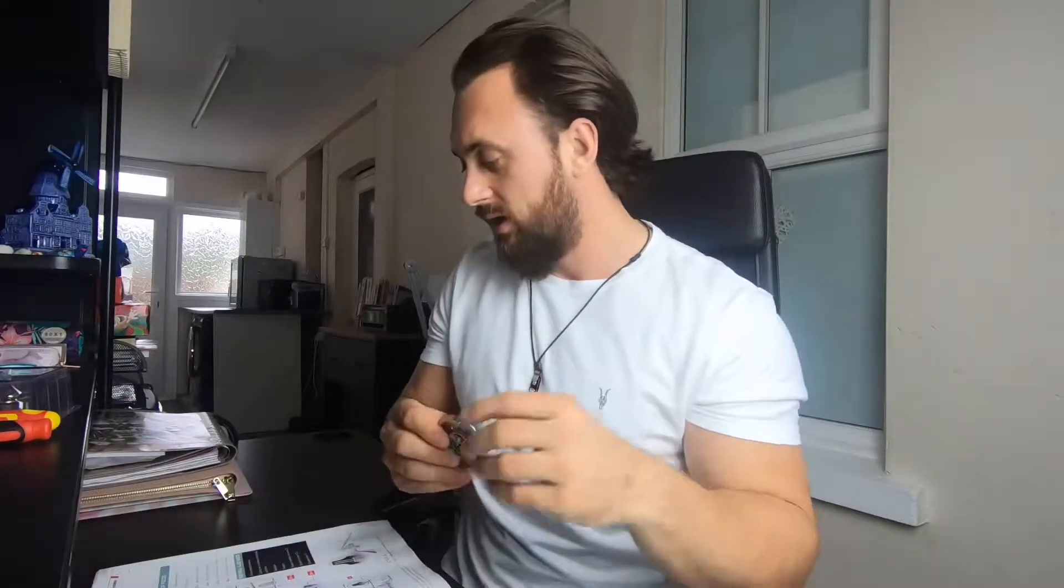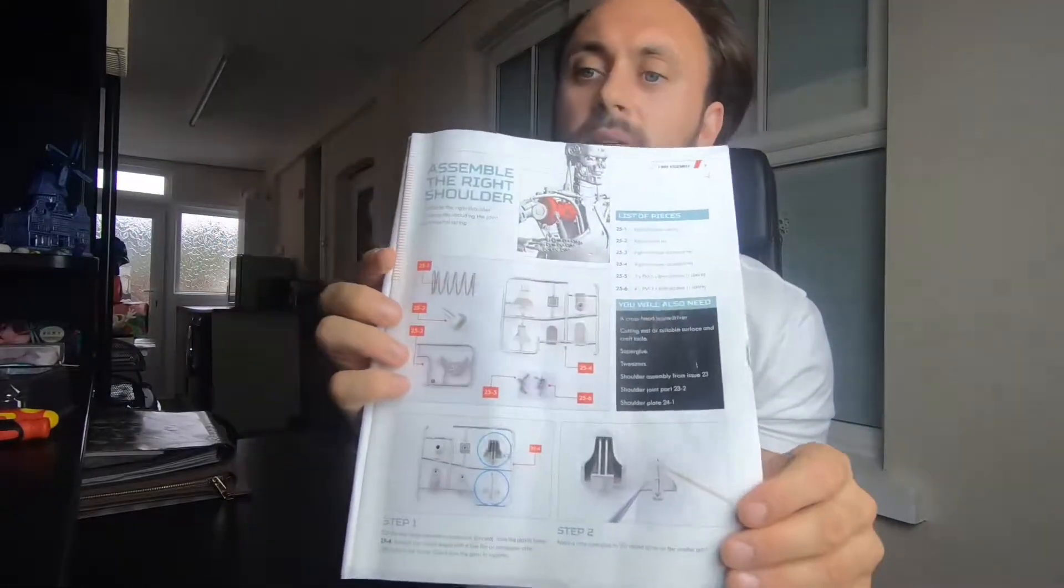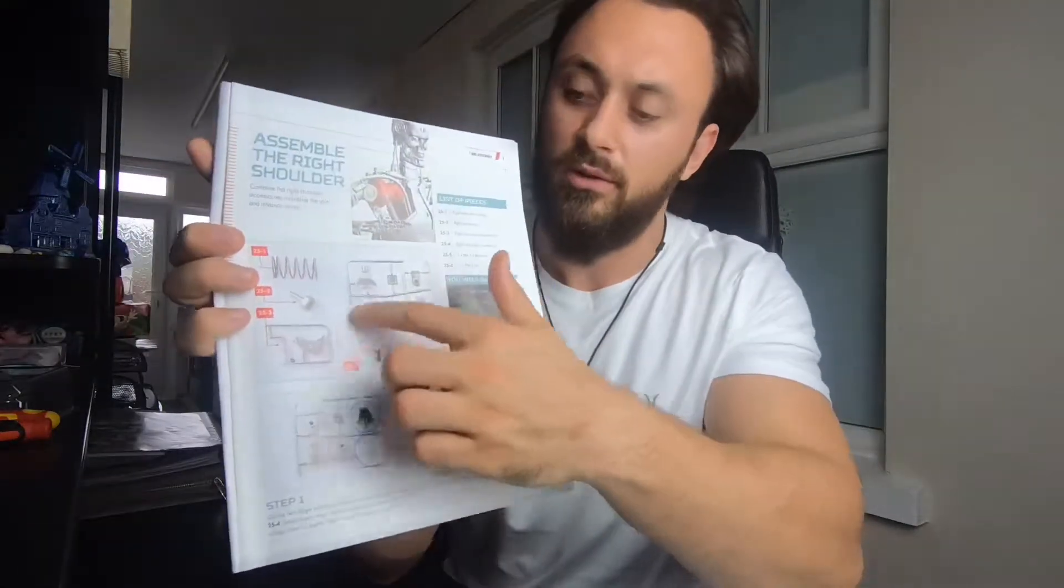Welcome back everyone, thanks for tuning in to another episode of Build the Terminator. Today we're going to be working on assembling the shoulder joint, and there are going to be some components from previous issues that we had. First of all, we've got issue 25. If you look here, obviously on the magazine, these are the parts we're going to be working with today. I'm going to show you more close up in a moment, but the first one you want from the last issue is 24-1. We've also got component 23-2, and lastly from the previous issues, 22 part one.